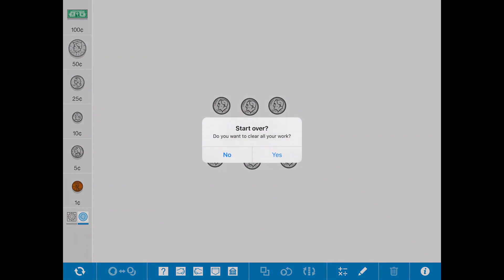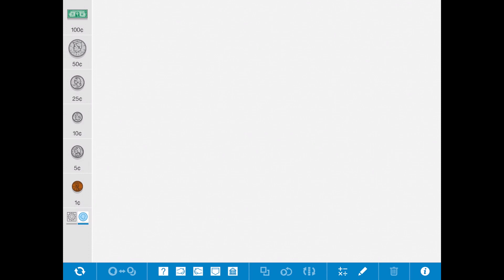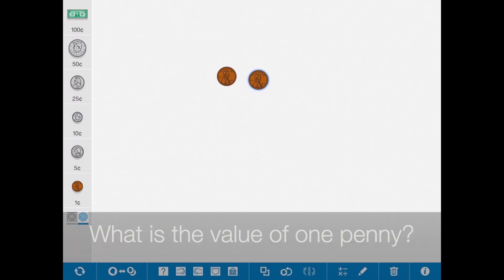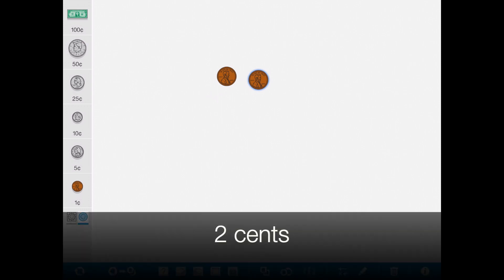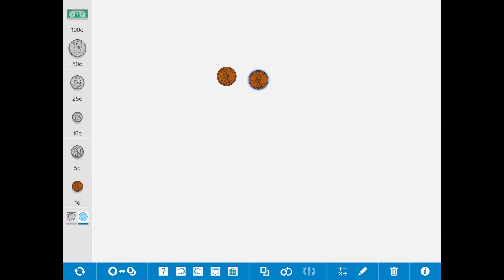Let's start a new one. And again, as we're going through, I want you to really think about how it is that you are adding the numbers together. This time, grab two pennies. Now, what is the value of one penny? One cent. What is the value of two pennies? Two cents. Now, how did you determine that the value of two pennies is two cents?